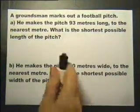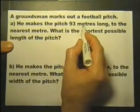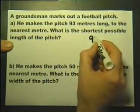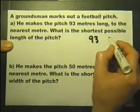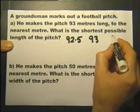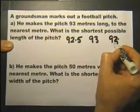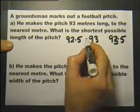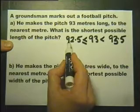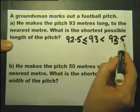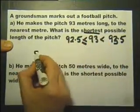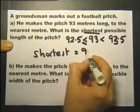The groundsman marks out a football pitch. He makes the pitch 93 metres long to the nearest metre. What is the shortest possible length of the pitch? Now if 93 is measured to the nearest metre, that means to say that it could be anywhere between that value and almost that value. And the way we show it is to write it like that. 93 to the nearest metre is somewhere between 92.5 metres and 93.5 metres. And it can include the value of 92.5 metres. So the shortest possible value is in fact 92.5 metres.